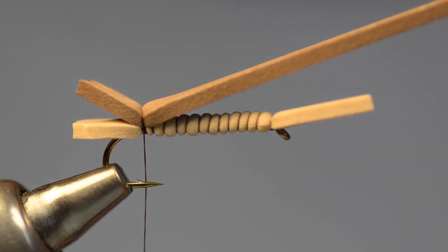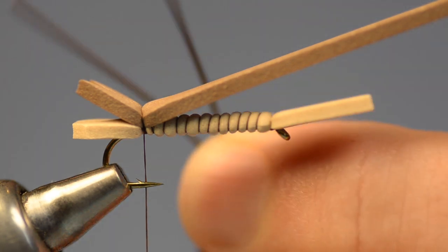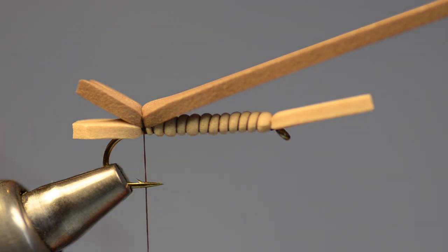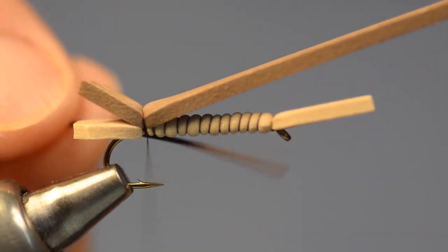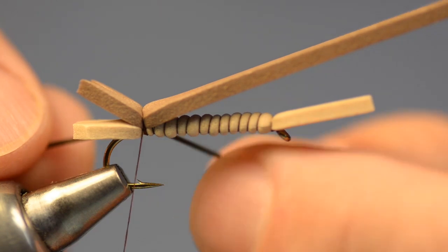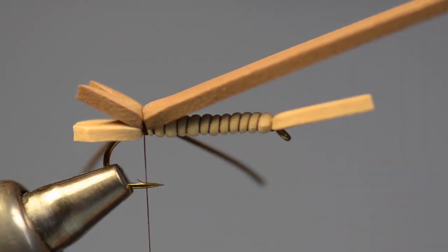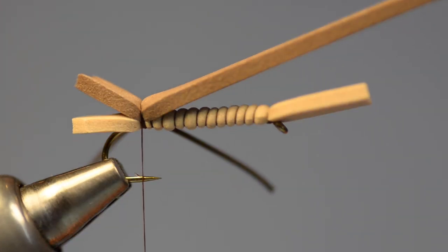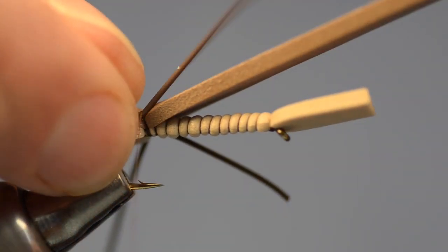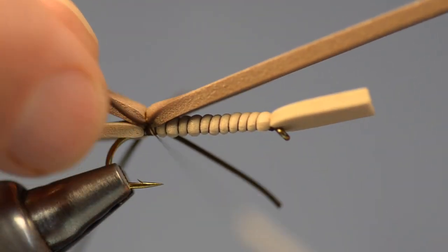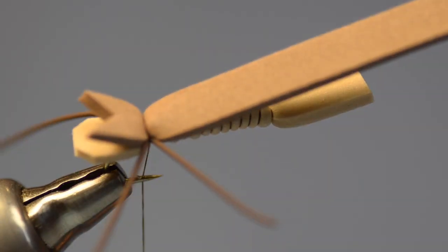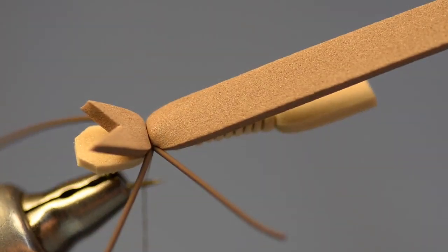And now we're going to put in the first set of legs. So I'm going to take, this is medium brown rubber legs, I'm going to take just a single strand here on my near side and catch it with a turn of thread just about at the center of its length, and I'll pull it down tight, and I'm going to do the same thing on the far side, a couple turns, so that's all centered up on the top of the fly.